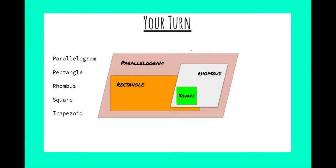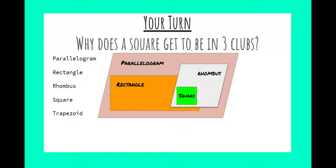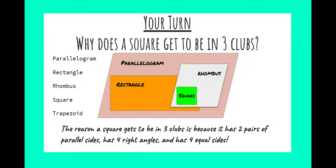Now for a quick review — it's your turn. Pause this video and see if you can answer this question: why does a square get to be in three of the clubs — parallelograms, rectangles, and rhombus? Hopefully you were able to answer it. The reason a square gets to be in three clubs is because it has two pairs of parallel sides, four right angles, and four equal sides. That's why a square gets to be in all the clubs — a square is pretty cool.